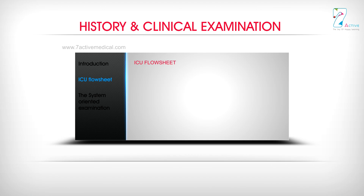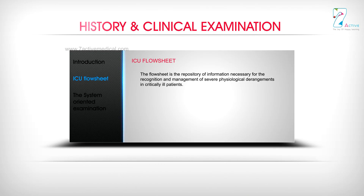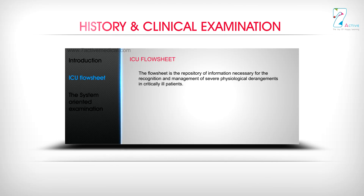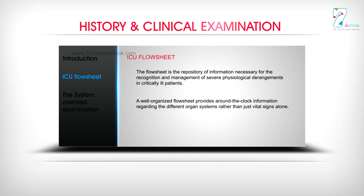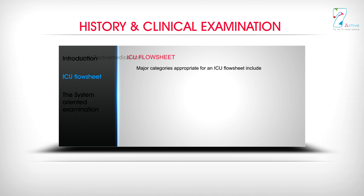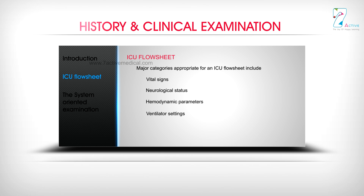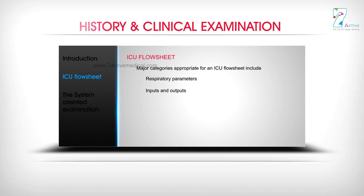The ICU Flow Sheet is the repository of information necessary for the recognition and management of severe physiological derangements in critically ill patients. A well-organized flow sheet provides around-the-clock information regarding the different organ systems rather than just vital signs alone. Major categories appropriate for an ICU flow sheet include: vital signs, neurological status, hemodynamic parameters, ventilator settings, respiratory parameters, inputs and outputs, and laboratory data.